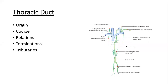What is the origin of the thoracic duct? It begins as the upward continuation of the cisterna chyli. Cisterna means sac, and chyli refers to the lymphatics. So the cisterna chyli is a sac-like lymphatic tissue, and the thoracic duct is its upward continuation. It passes through the aortic hiatus within the diaphragm to enter the thoracic cavity.